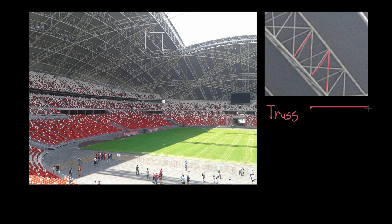Most commonly, a truss looks like what we have up here, where you have two long metal beams, and then in between them this triangular pattern of smaller beams. The question to answer today is: what's the point of this? Why have this pattern of steel beams? You see this not just in stadiums — if you look out for them, you'll notice them all over the place.